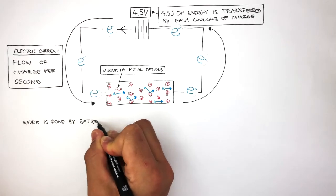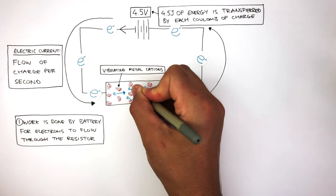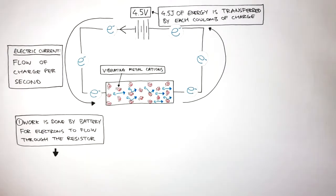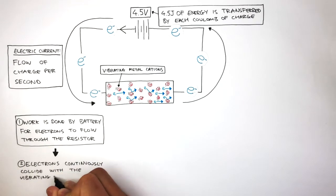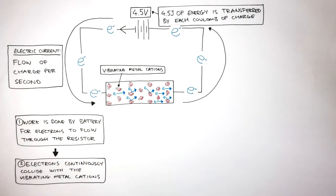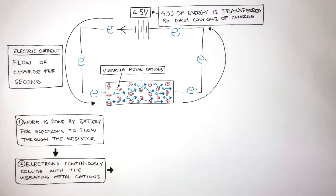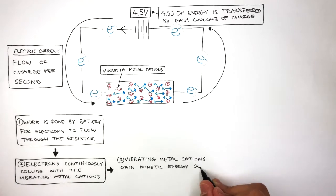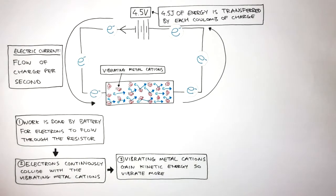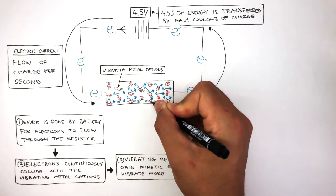Work is done by the battery for the electrons to flow through the resistor. As the current flows through the resistor, the electrons continuously collide with the vibrating metal ions, also known as cations. As these electrons continuously collide, the vibrating metal cations gain kinetic energy and vibrate more. The increase in kinetic energy causes the metal ions to vibrate more, shown here by the increase in movement lines.